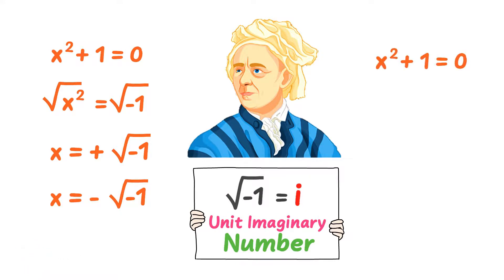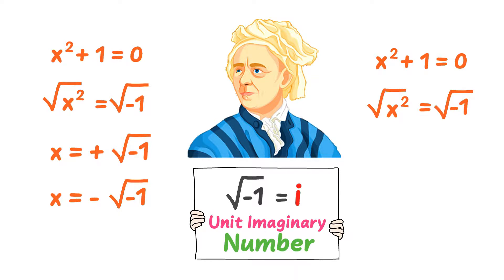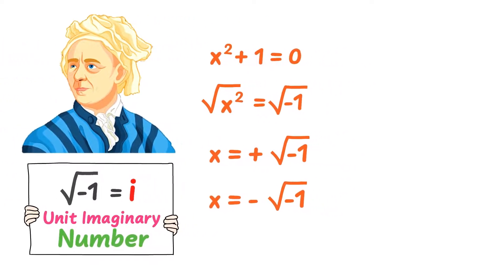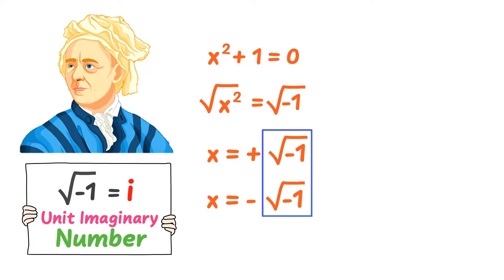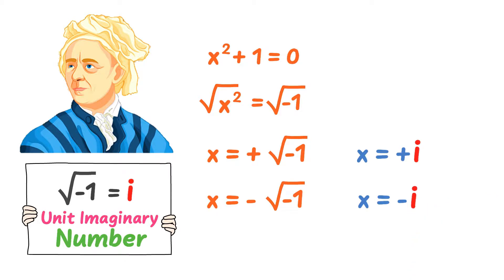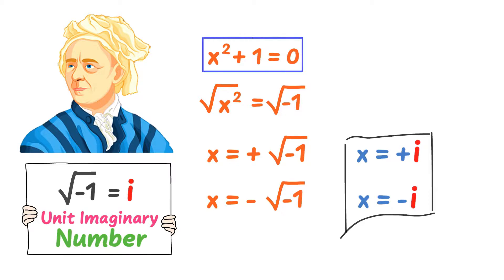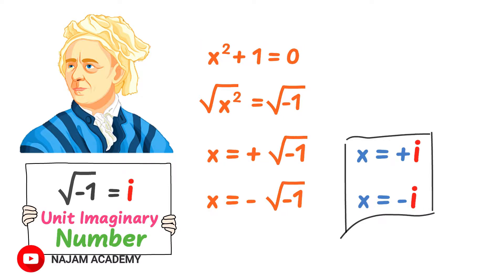Now, we can solve this equation easily with the help of the unit imaginary number. x squared is equal to minus 1. Taking square root on both sides, we get x is equal to plus square root of negative 1 or x is equal to negative square root of negative 1. Since square root of negative 1 is equal to i, putting i in place of square root of negative 1, we get x is equal to plus i or x is equal to negative i. As a result, we get two possible solutions, plus i and negative i, for this algebraic equation. But both these solutions are imaginary.